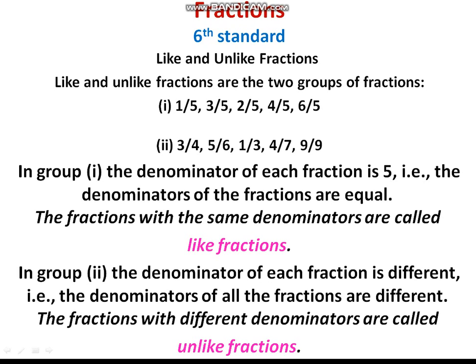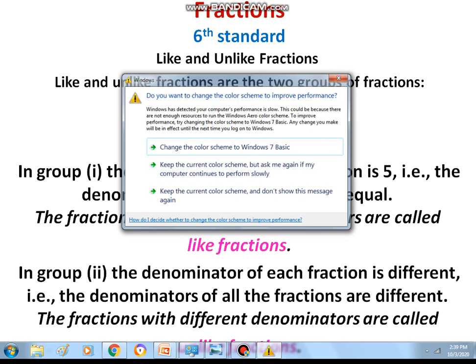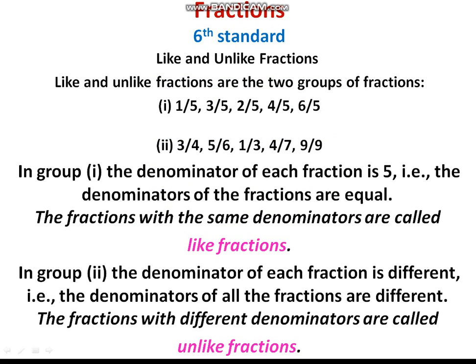In the first group: 1 by 5, 3 by 5, 2 by 5, 4 by 5, 6 by 5. Here the denominator is the same, that is 5. Therefore the denominator of each fraction is 5, so those are called like fractions. Next we will consider Group 2: 3 by 4, 5 by 6, 1 by 3, 4 by 7, 9 by 9. The denominators are different.